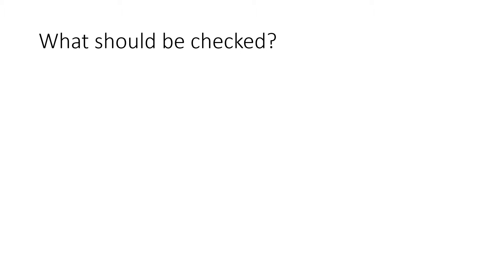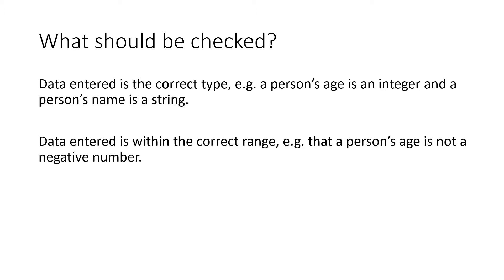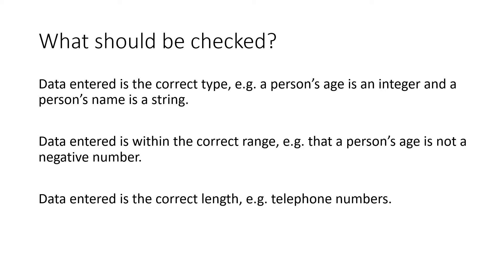Now there are a number of checks that can be done here. For example, you can have a type check — if you're expecting an integer, you could have something like that. Or you might have a range check, to see if it's within a certain range; for example, an age is not a negative number. You might have a length check — for example, telephone numbers are certain sizes, credit cards are certain lengths.